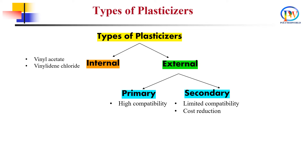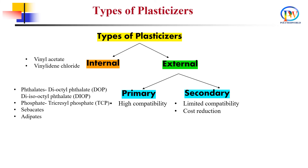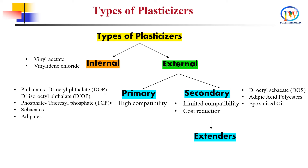The most common primary plasticizers are phthalate compounds, and secondary plasticizers are sebacates, polyesters and epoxidized oils. Secondary plasticizers have a subset category called extenders. They are commonly employed with primary plasticizers to reduce cost in general purpose flexible PVC.